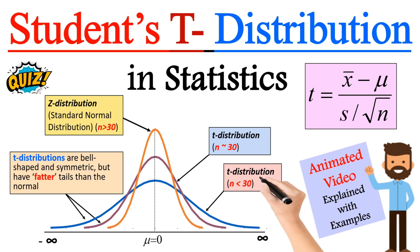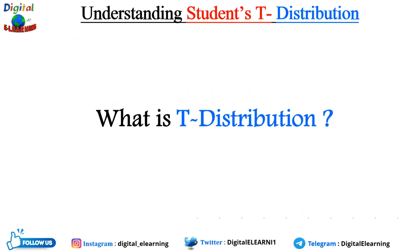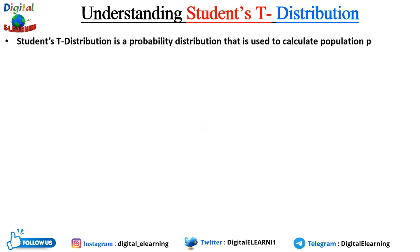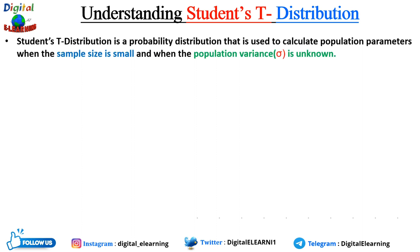What is t-distribution? The student t-distribution, or the t-distribution, is the probability distribution used to calculate population parameters when the sample size is small and when the population variance is unknown. These are the two conditions under which we use the t-distribution: when the sample size is small (less than 30) and when the population variance is unknown. Otherwise we use the z-distribution.